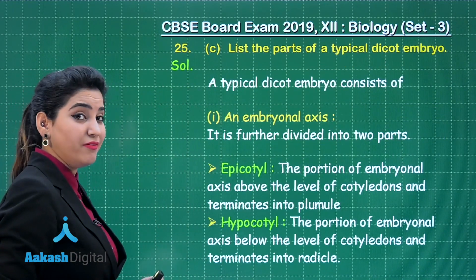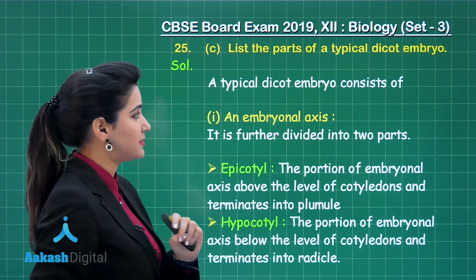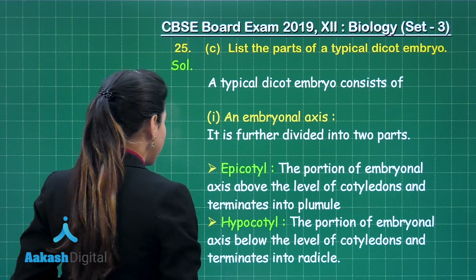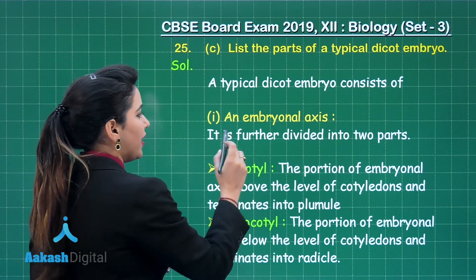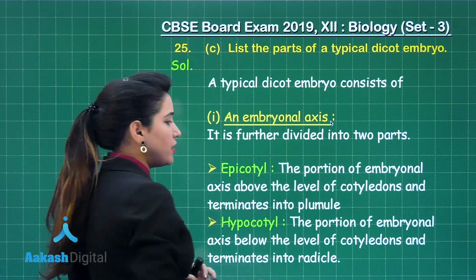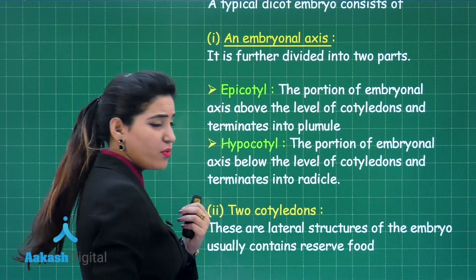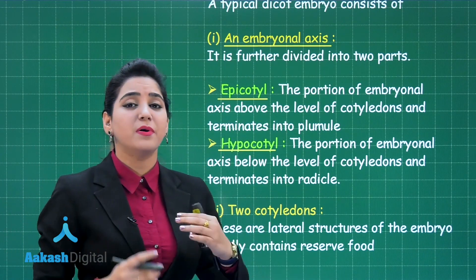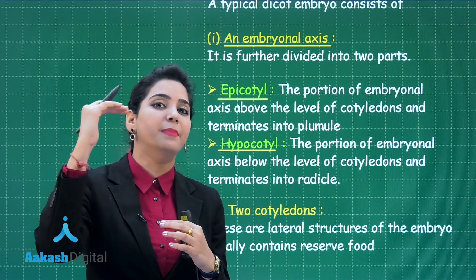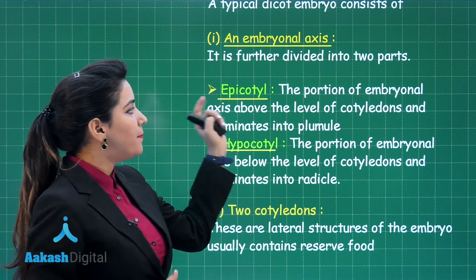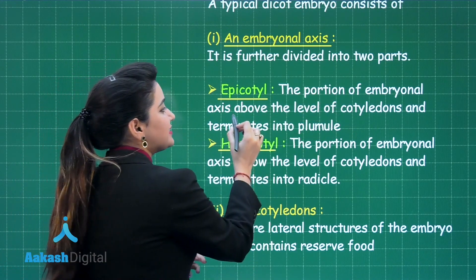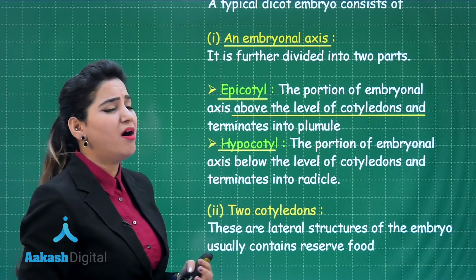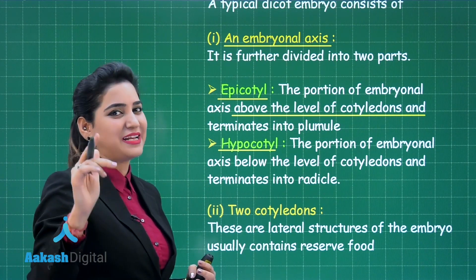Moving further to part C, which is worth two marks: list the parts of a typical dicot embryo. A typical dicot embryo will comprise of number one, the embryonal axis, which is further divided into two parts: epicotyl and hypocotyl. Remember, 'epi' in biology always means above — so the portion of the embryonal axis above the level of cotyledons will be known as epicotyl. Epicotyl gives rise to plumule, and plumule gives rise to the shoot.